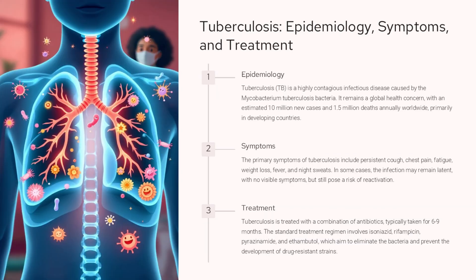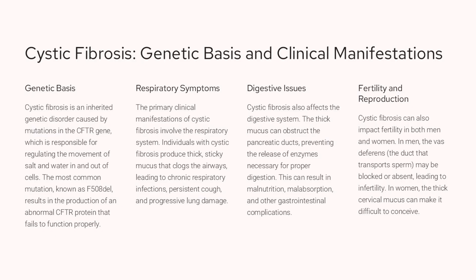Tuberculosis is a highly contagious infectious disease caused by the Mycobacterium tuberculosis bacteria. It remains a global health concern with an estimated 10 million new cases and 1.5 million deaths annually worldwide, primarily in developing countries. Primary symptoms include persistent cough, chest pain, fatigue, weight loss, fever, and night sweats. In some cases, the infection may remain latent with no visible symptoms but still pose a risk of reactivation. Tuberculosis is treated with a combination of antibiotics typically taken for six to nine months, involving isoniazid, rifampicin, pyrazinamide, and ethambutol, which aim to eliminate the bacteria and prevent drug-resistant strains.